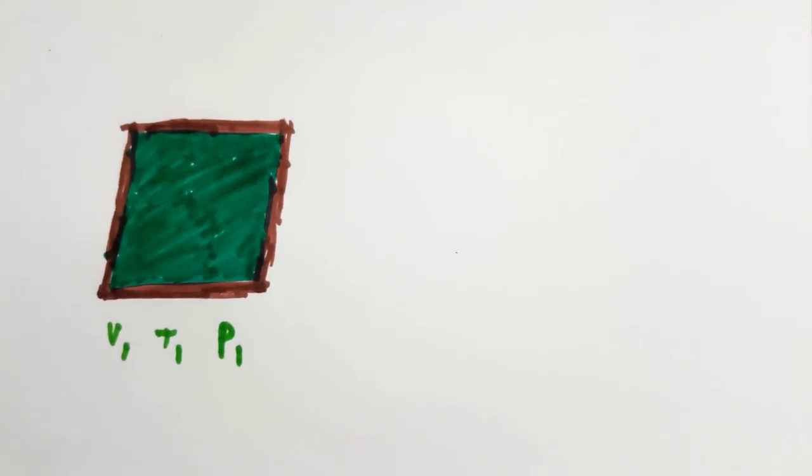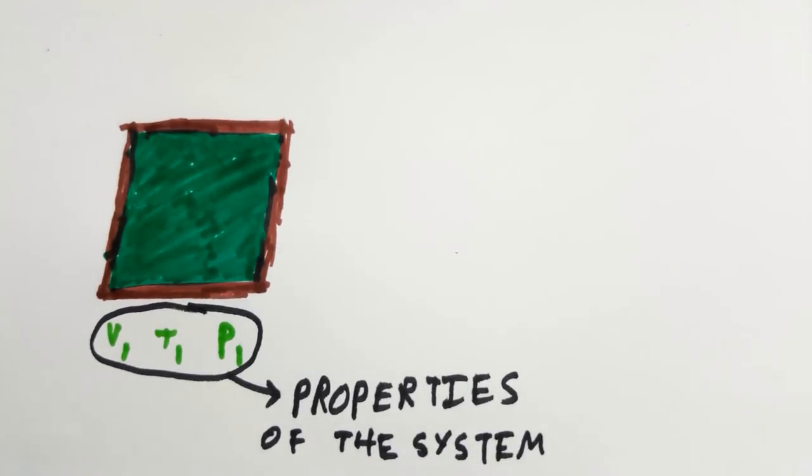Every system has certain characteristics by which its physical condition may be described, example, volume, temperature, pressure, etc. Such characteristics are called the properties of the system.